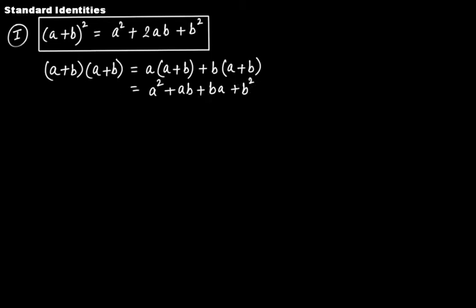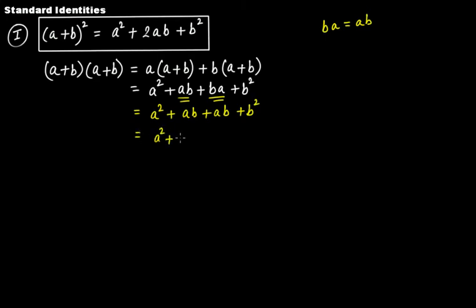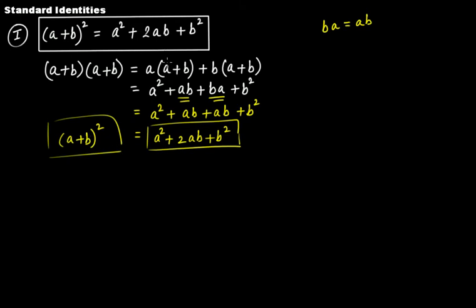Now ab and ba are two like terms. Why? Because ba — that is b multiplied by a — can be written as a multiplied by b, by the commutative property of multiplication. So if we write ba as ab, then we have a squared plus ab plus ab plus b squared, which gives us a squared plus 2ab plus b squared. So this is the proof of the first standard identity.